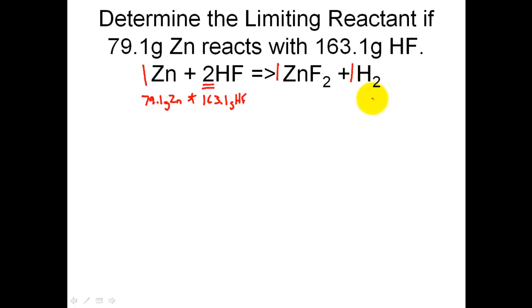we're going to choose one of these two products to end our problem at. And for me it's just a little easier to end the problem at H2 just because it's a very easy molar mass. So the problem is going to end here. How many grams of H2 will both of these reactants make? And whichever one of these reactants makes the least amount of hydrogen, that will be called my limiting reactant.